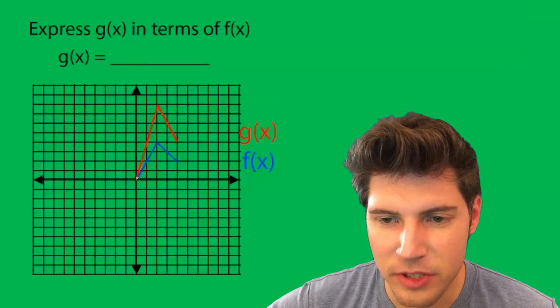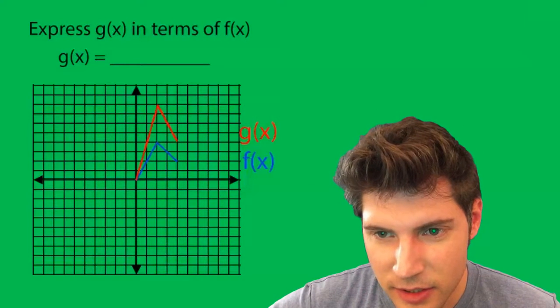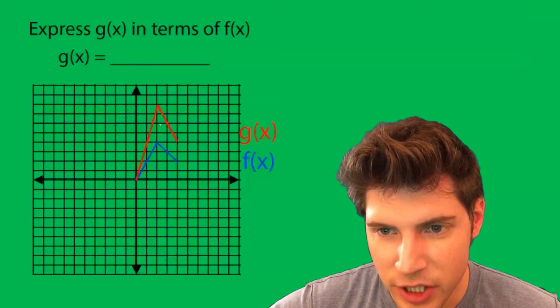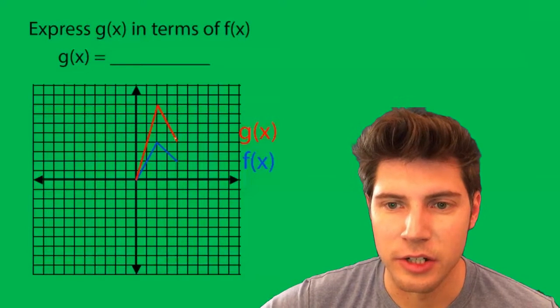Since zero zero is still zero zero, usually that means there's no translation. And since the y's are changing but the x's are staying the same, it looks like we have a vertical dilation.